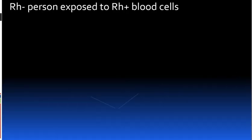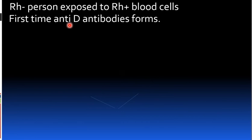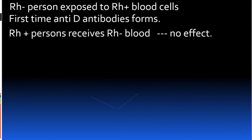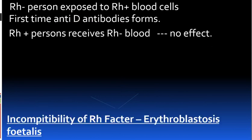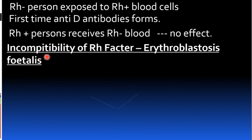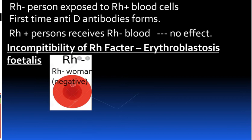When an Rh negative person is exposed to Rh positive blood cells, they produce anti-D antibodies. On first exposure there may be little effect, but on second exposure the immune response is stronger. An Rh negative person receiving Rh positive blood will eventually mount an immune response.